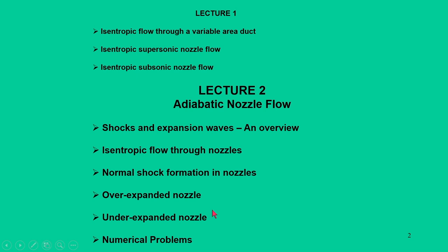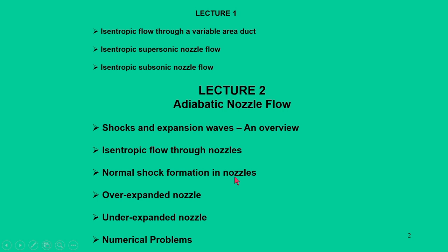Based on the expansion in the nozzle, there are situations we call the nozzle over-expanded and situations we call it under-expanded. In all these cases, we will see how a normal shock first develops, then slowly weakens into oblique shocks, and finally becomes expansion waves if the pressure difference is very large. All these things will be covered in this lecture.